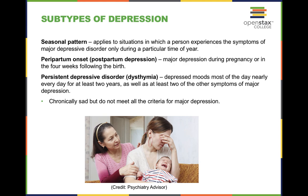Let's look at some subtypes of depression. First is the seasonal pattern, otherwise known as seasonal affective disorder — acronym S.A.D. This applies to situations where a person experiences the symptoms of major depressive disorder but only during a particular time of the year. For most people, they experience seasonal affective disorder during the winter months, when it gets colder and there's less daylight — some people go into work in the dark and leave work in the dark.